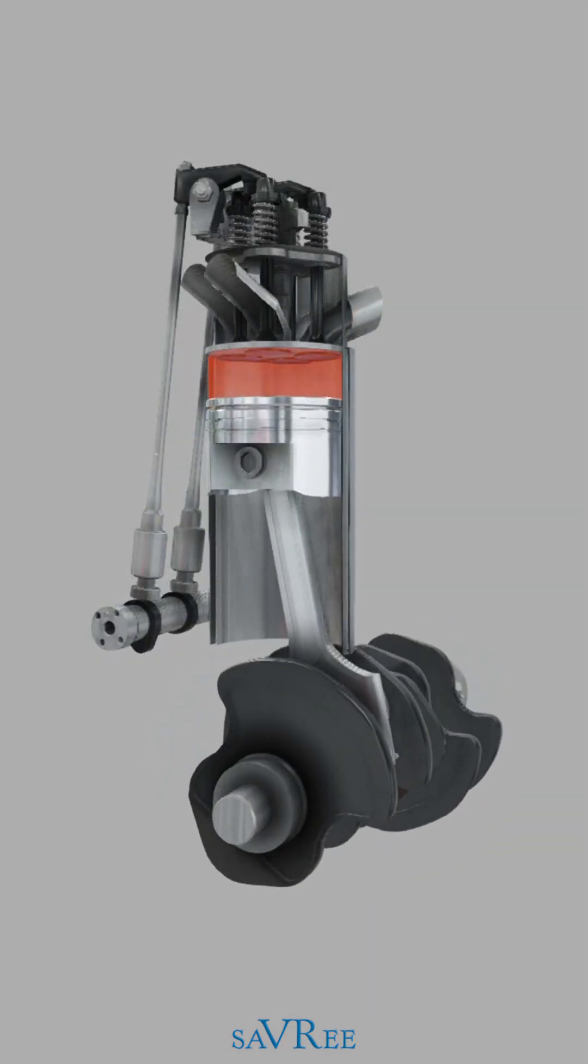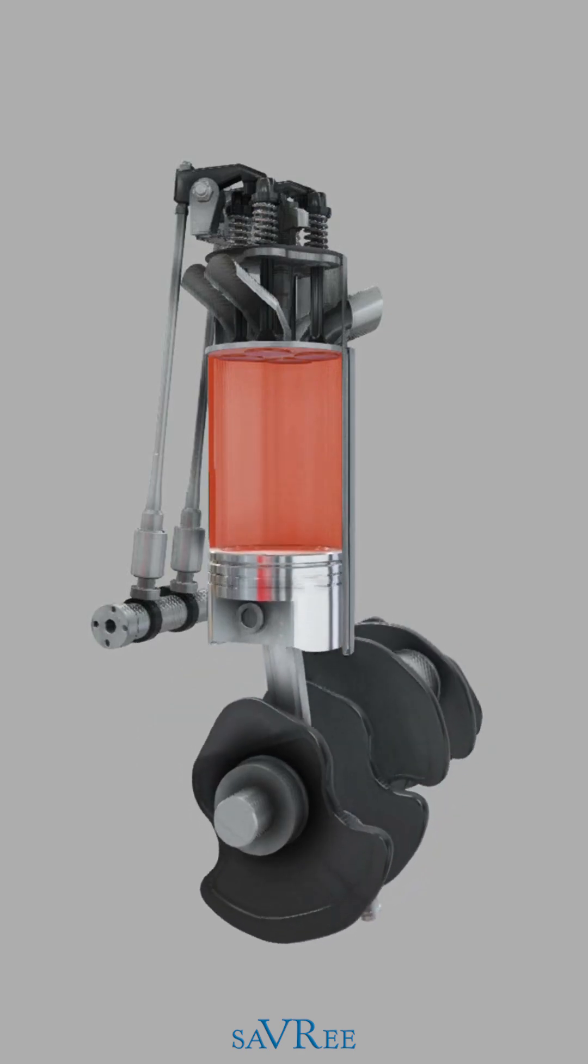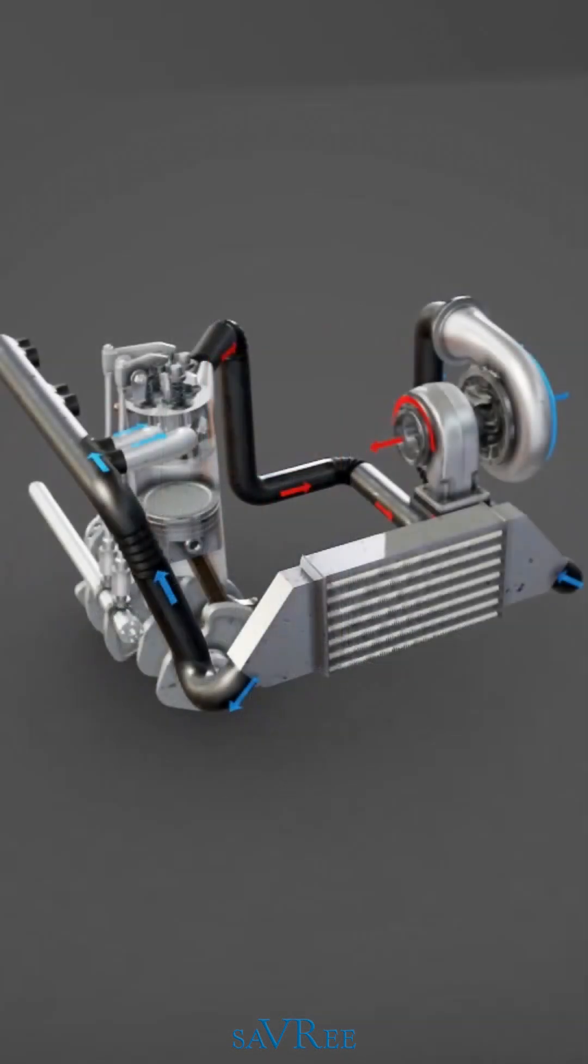Combustion of the fuel creates mechanical power, which is transferred to a load, such as a car's transmission. The exhaust gases from combustion are used to drive the turbine, which in turn drives the compressor and the process continues.